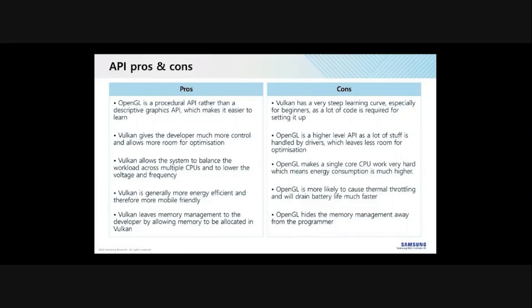The other major design difference is Vulkan's multi-threading model. OpenGL was never designed with multi-threading in mind, and although later iterations attempted to add it, the required context switching never worked well. Vulkan addresses this by allowing API calls to be made on any thread without context switching. The onus is on the developer to use mutexes appropriately and avoid race conditions, which greatly expands the performance ceiling over OpenGL.